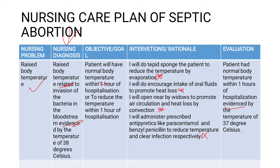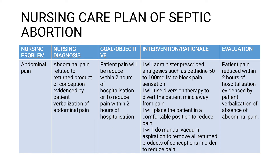In terms of the evaluation, remember the evaluation should also have an evidence and you are evaluating your objective. So the evaluation, we can say patient had normal body temperature within one hour of hospitalization, evidenced by a temperature of 37 degrees Celsius.